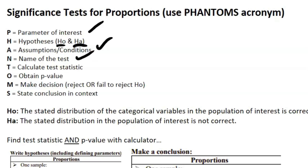Continuing PHANTOMS: A is Assumptions and conditions, just like normal. N is the Name of the test. T is the Test statistic — a value used to evaluate the test. You can just use your calculator's significance test command and it will give you the test statistic. O is Obtain the p-value — don't calculate the test statistic by hand with a formula.